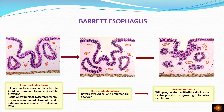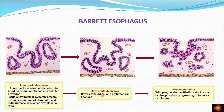From Barrett's esophagus without dysplasia, the patient can develop low grade dysplasia, which shows abnormality in glandular architecture, irregular shapes, cellular crowding, hypochromatic nuclei, and a mild increase in the nuclear-to-cytoplasmic ratio. From low grade dysplasia, the patient may progress to high grade dysplasia, characterized by large hypochromatic nuclei and severe cytological and architectural changes — but the cells are still confined above the basement membrane.